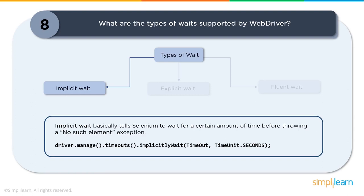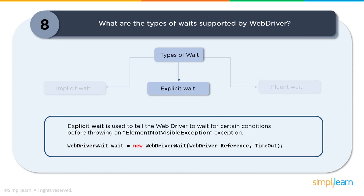Once an implicit wait time is set — say 10 seconds — the WebDriver waits that duration before throwing an exception if the element is not found. The syntax is: driver.manage().timeouts().implicitlyWait(10, TimeUnit.SECONDS). Implicit wait is applied globally to all elements throughout the driver instance and is defined only once, remaining the same throughout the driver object's lifetime.